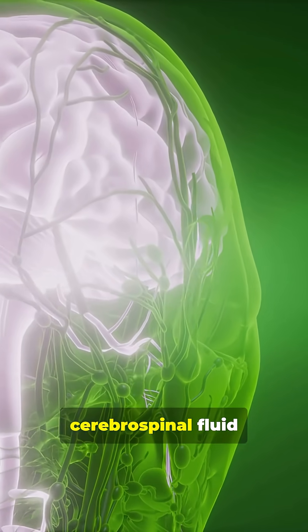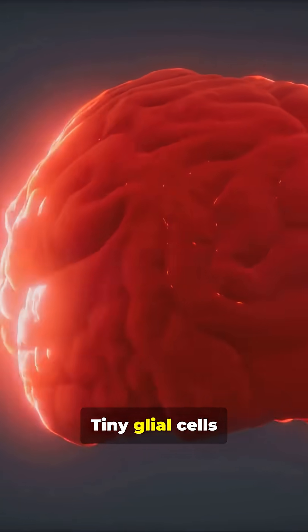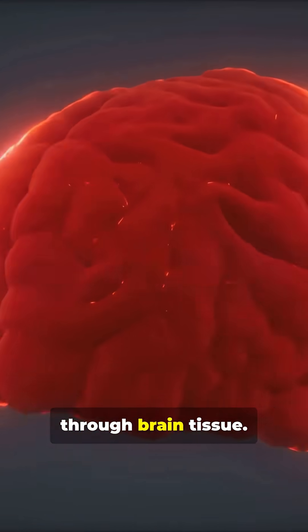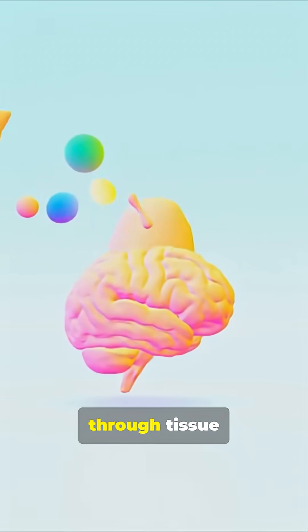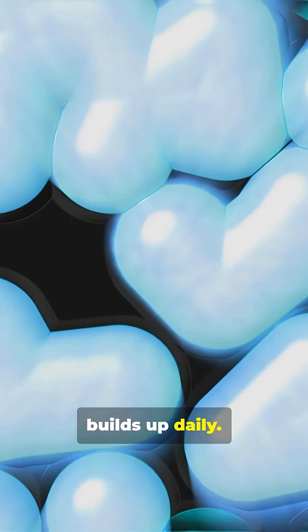During sleep, cerebrospinal fluid flows along channels beside vessels. Tiny glial cells push that fluid through brain tissue. The fluid washes through tissue collecting metabolic waste. That includes beta amyloid and other trash that builds up daily.